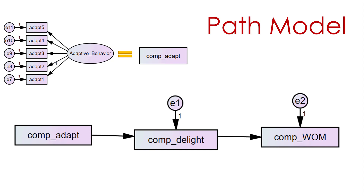The issue that comes up is: what if I don't want to test it as a composite variable? What if I want to test my model in the full structural model with the unobservable variables and the error terms off of the measurement items too? How do I do that? That's what we're going to focus on today.